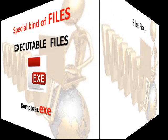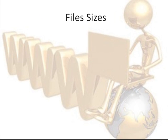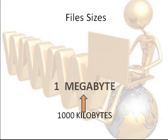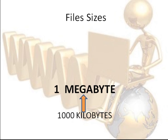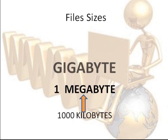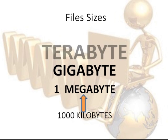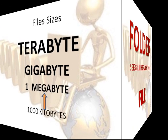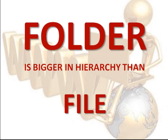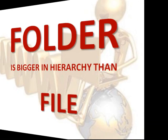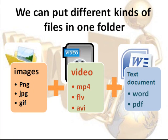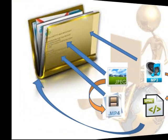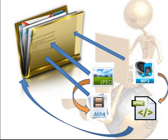For file sizes, we are going to start with kilobytes. One thousand kilobytes is one megabyte, one thousand megabytes is one gigabyte, and one thousand gigabytes is one terabyte. A folder is bigger in hierarchy than a file. We can put different kinds of files in one folder — JPEGs, MP3s, HTMLs, and MP4s all together.